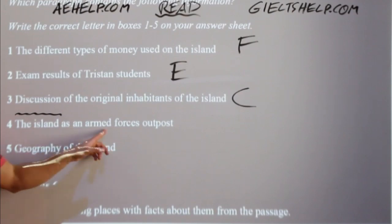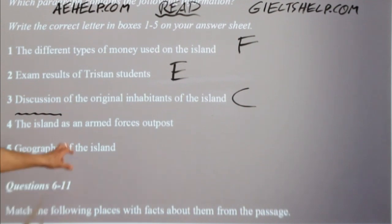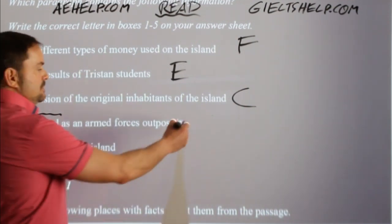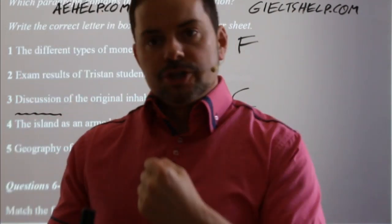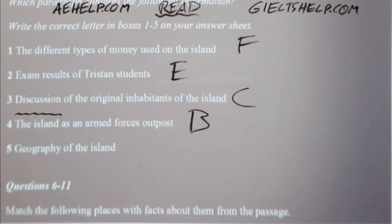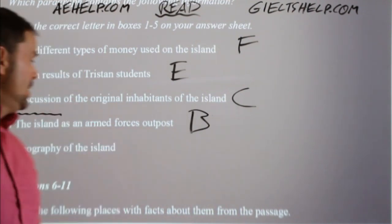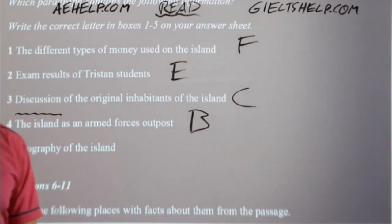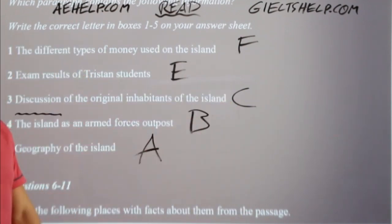Number four — the island as an armed forces outpost. Maksud was very quick — that's an easy one because we visualized it clearly: it was paragraph B with the Portuguese sailor being chased away by the British naval ship. Number five — geography of the island, where it's located. Pavan says A, and he's absolutely right — it is A. So the answers are F, E, C, B, A. When you practice visualization, there's a good chance you can answer at least four out of five accurately and confidently without even going back to the passage.